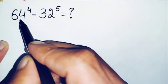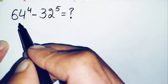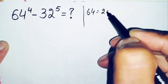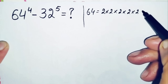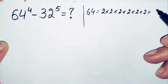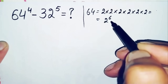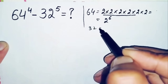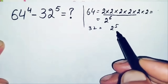First of all, we will try to change these two bases — 64 and 32 — to their exponential form with base 2. We can write 64 as 2 × 2 = 4, 4 × 2 = 8, 8 × 2 = 16, 16 × 2 = 32, and 32 × 2 = 64. So 2 is multiplied 6 times, meaning 64 = 2^6. Similarly, multiplying 2 five times gives 32, so 32 = 2^5. We will replace 64 with 2^6 and 32 with 2^5.